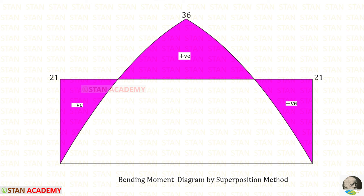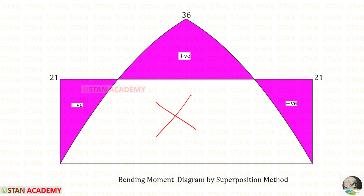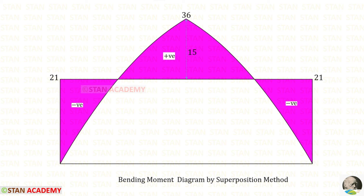Now we combine the Mu diagram and the Mu-dash diagram to get the bending moment diagram. Wherever values appear alone we mark them with signs; wherever they overlap we leave the space empty. To find the maximum positive bending moment, we subtract 21 from 36: 36 minus 21 gives 15.